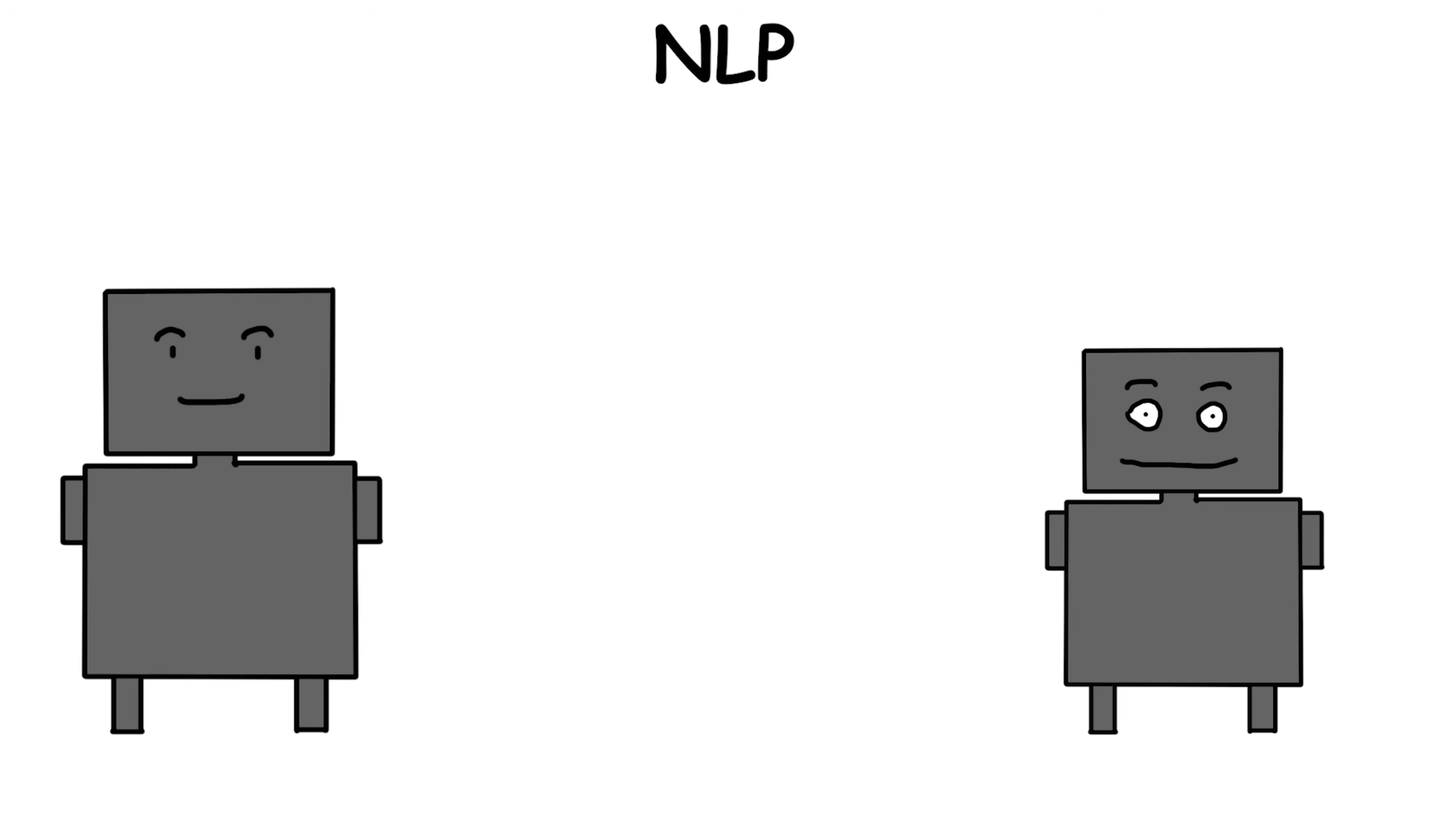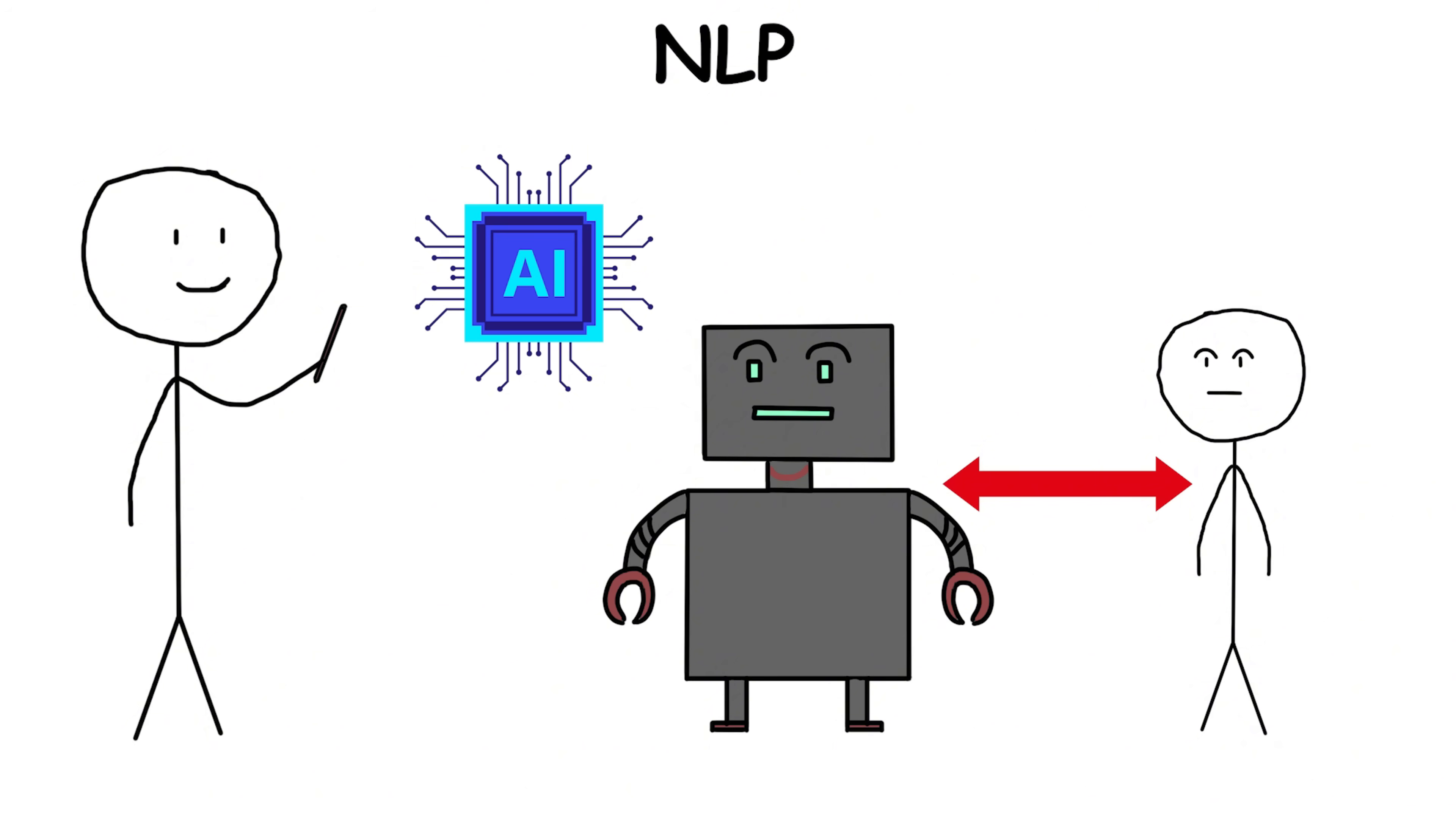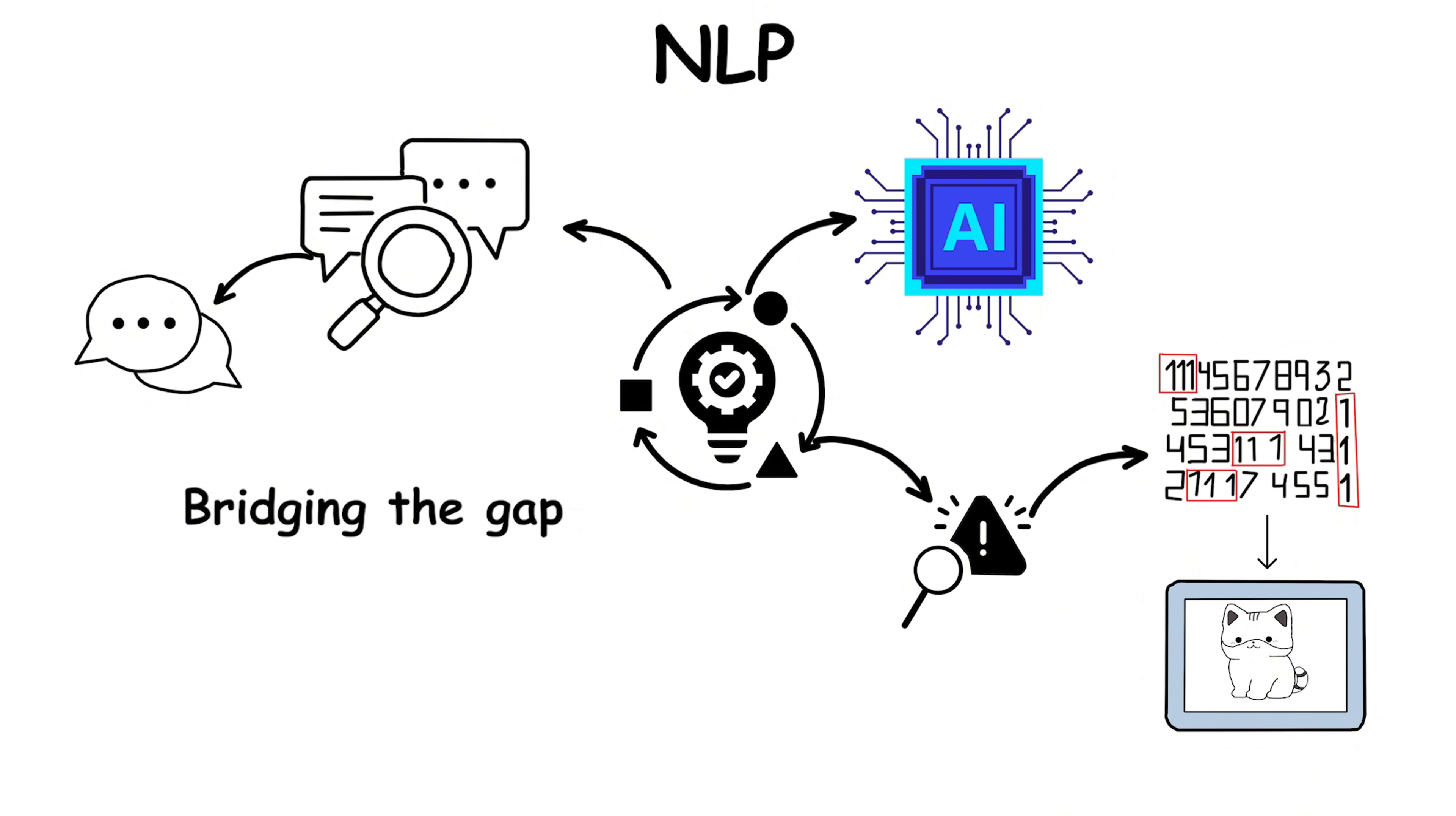Unlike earlier AI that only handled structured data, NLP deals with the ambiguity of human language, learning from large data sets scraped from books, articles, and conversations. This stage pushed AI closer to human-like communication, enabling technologies like GPT models to produce paragraphs of coherent text, or customer support bots to solve user issues. It transformed AI from recognizing patterns in images to understanding context in conversations, bridging the gap between machine logic and human expression.